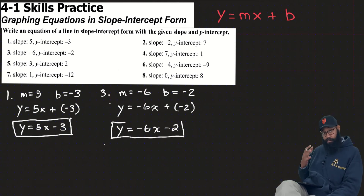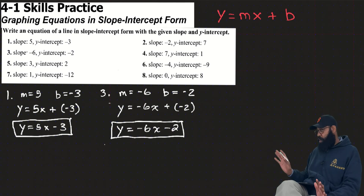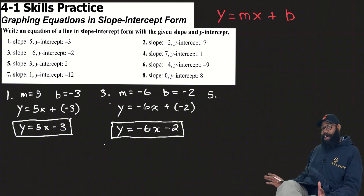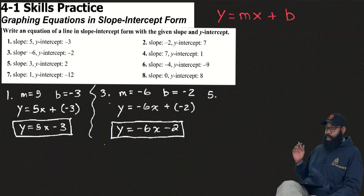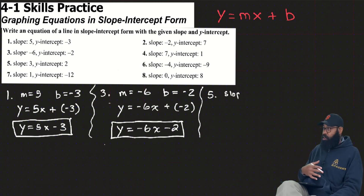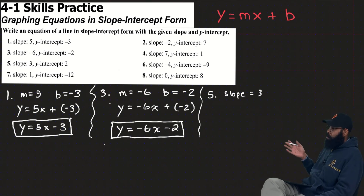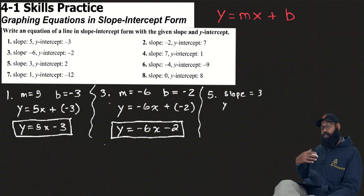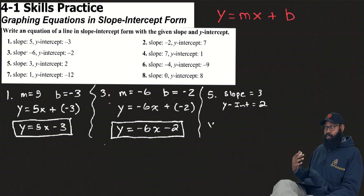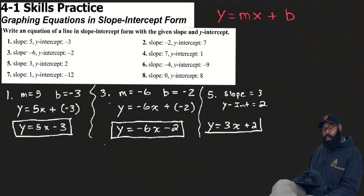Moving on to number 5. Simple concept — if you understand it, it's simple. We're not doing any math, we're just plugging in. Slope is 3, y-intercept is what we write out. I'm using the actual vocabulary: slope means rise over run, y-intercept is where it crosses the y-axis.